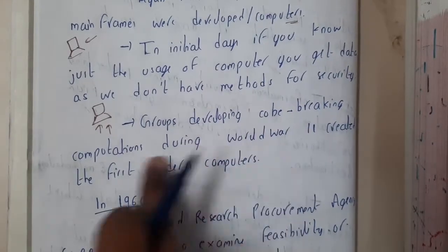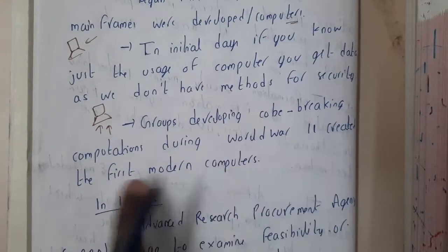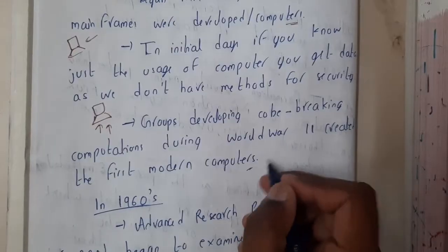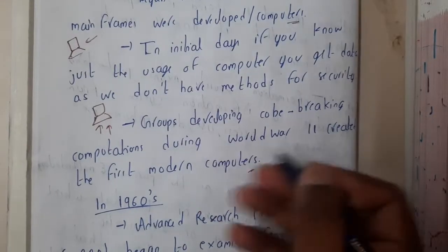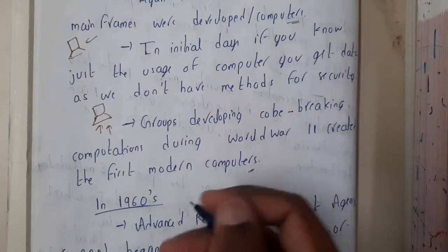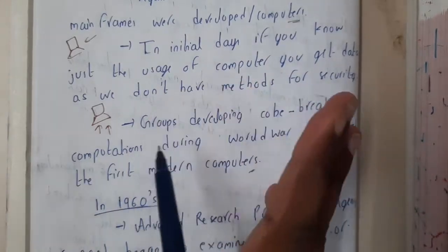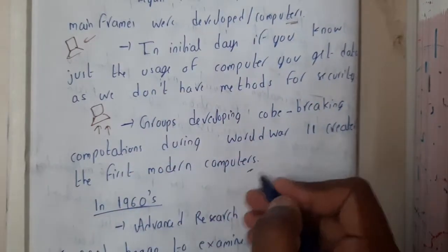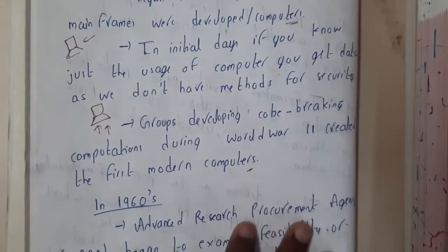Developing code-breaking computation during World War II created the first modern computers. During the war, many people who were good at coding used these systems to get data, and they were misused many times.